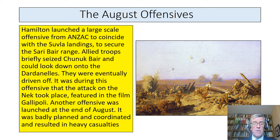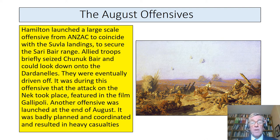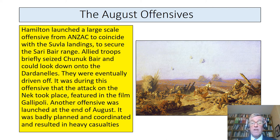In the August Offensive, Hamilton launched a large-scale offensive from Anzac to coincide with the Suvla landings to try and secure the Sari Bair range. Allied troops briefly seized a mountain called Chunuk Bair and thought they were going to be victorious because they could look down onto the other side of the Dardanelles, but they were eventually driven off. It was during this offensive that the attack on the Nek took place, featured in the film Gallipoli. Another offensive was launched at the end of August but was badly planned and resulted in heavy casualties.